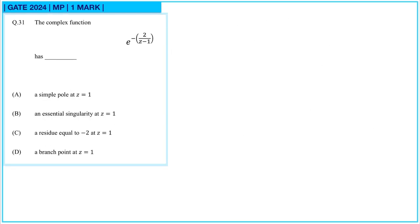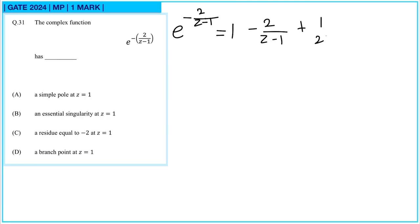The complex function e raised to minus 2/z can be expanded as an x-series: e raised to minus 2/(z−1). This can be written as 1 minus 2/(z−1) plus 1/(2!) times 2/(z−1) squared minus 1, and so on.